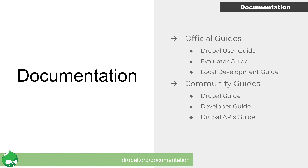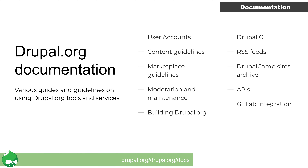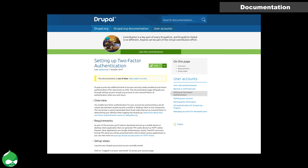Everyone uses documentation — to find out about how to use a new feature or just to find some troubleshooting steps for something that isn't working quite right. Within Drupal.org there is plenty of documentation in the form of official guides such as the Drupal User Guide, Evaluator Guide, and Local Development Guides or Community Guides. These can all be found in Drupal.org documentation. There is always scope for more documentation, and the best way to start is to ask yourself what documentation you have needed in the past that was not available. On the Drupal.org site, if you see an edit button, you are free to suggest an edit to the content. You can find a lot more information at drupal.org/contribute/documentation.